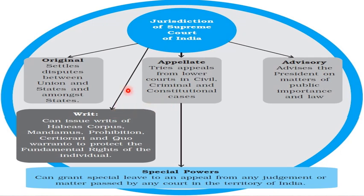Third, Writ Jurisdiction — as we have read in the previous chapter, the Supreme Court can issue writs of Habeas Corpus, Mandamus, Prohibition, Certiorari, and Quo Warranto to protect the fundamental rights of individuals. This is according to the fundamental rights and their protection. Fourth, Special Powers: the Supreme Court can grant special leave to appeal from any judgment or matter passed by any court in the territory of India. These are the jurisdictions of the Supreme Court of India.